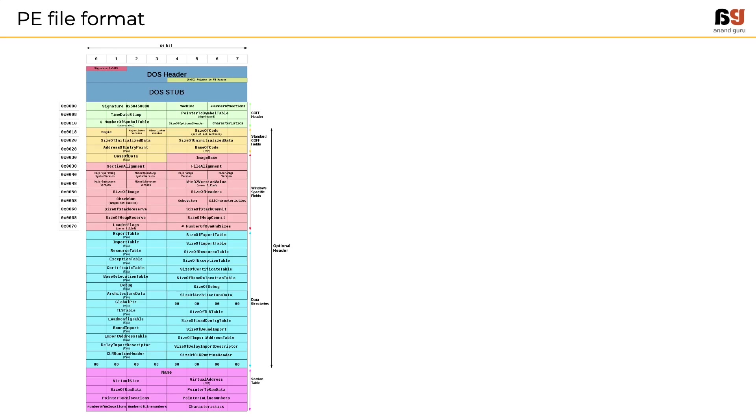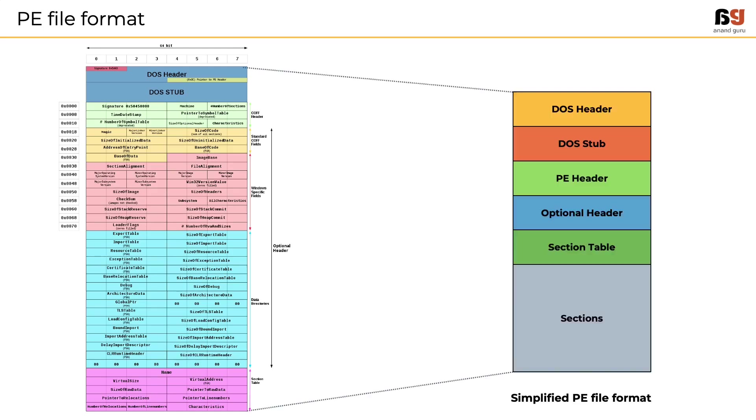With this background, let's start exploring the PE file format. I will give you a warning that this module might sound difficult to grasp, but don't get discouraged — just watch it a couple of times to get a fair understanding. A typical PE file has several parts; however, it is not required for a malware analyst to know all of them. We will simplify the PE structure and understand what each part does.